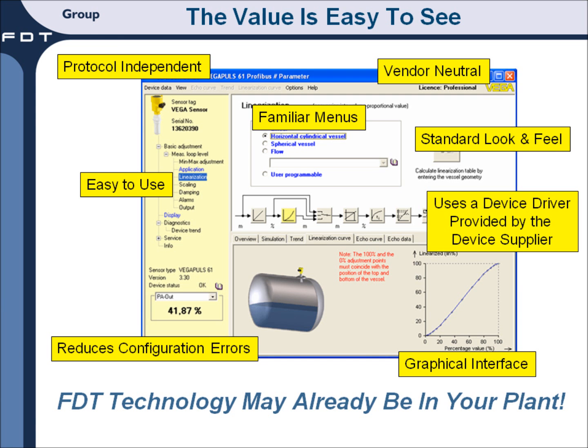Here's another example of a DTM. In this case, the device supplier provides graphical images, trends, drop-down windows, and maybe a wizard to help with the configuration. They're all very easy to use — familiar menus and drop-downs to make it easy to configure the device, reducing errors and making it much faster to get the device into operation.